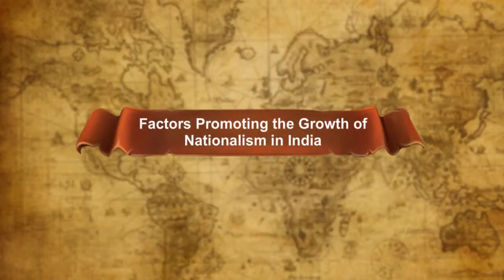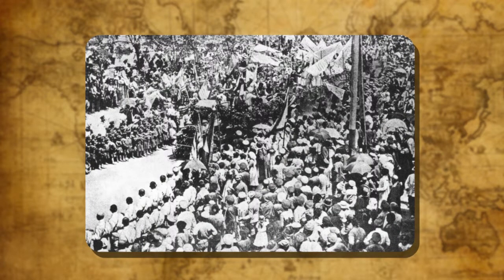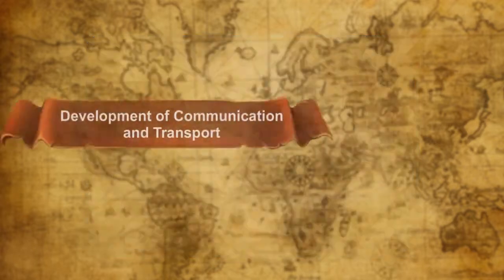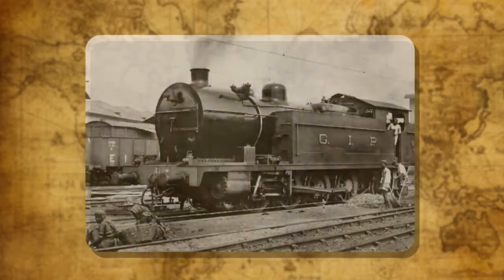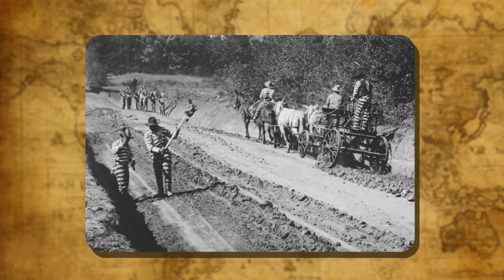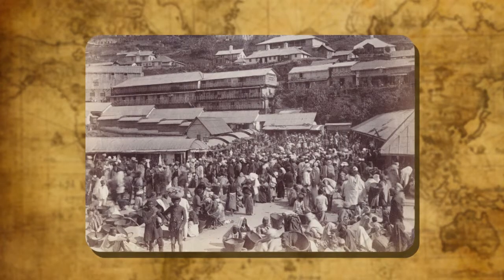Factors Promoting the Growth of Nationalism in India. The first cause was political unity. For the first time, most of the regions in India were united politically and administratively under British rule, which introduced a uniform system of law and government. The introduction of railways, telegraph, postal services, and the construction of roads and canals facilitated communication among the people and provided the facility to organize the national movement on an all-India basis.